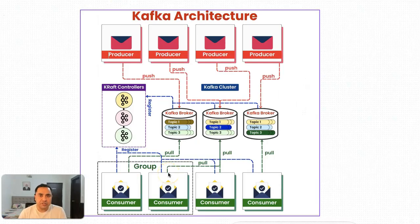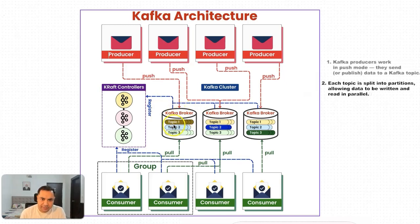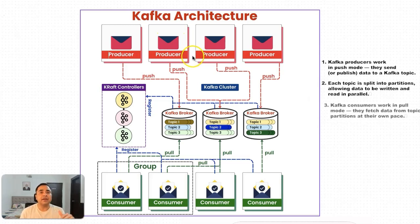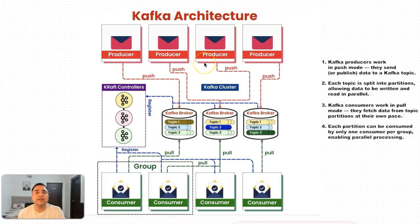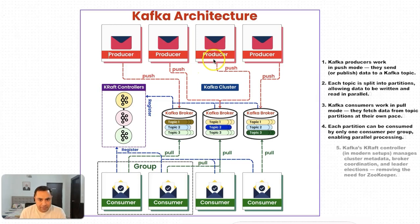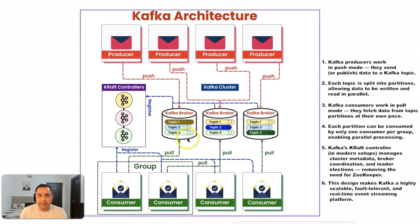Now let's understand the Kafka architecture. You have a producer pushing data to Kafka brokers. Within a broker we have topics, and within topics we have different partitions. It works on a push-pull model: the producer pushes independently, the consumer doesn't need to match the producer's speed. Multiple producers can write in the form of topics, and consumers pull data based on their own processing speed. Consumers subscribe to a topic and read from partitions, allowing you to create different consumers based on partition count.